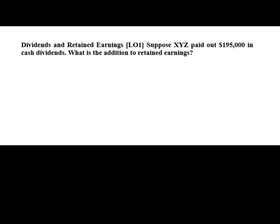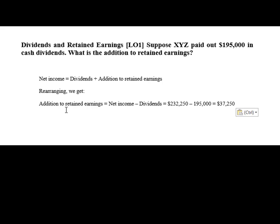We're going to go a couple of steps further into the same problem and look at dividends and retained earnings. Suppose that XYZ company paid out $195,000 in cash dividends. What is the addition to retained earnings? Cash dividends is money paid out to stockholders, while retained earnings is the money essentially kept in the bank from year to year. Net income equals dividends plus the addition to retained earnings.